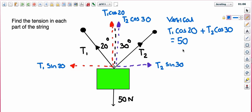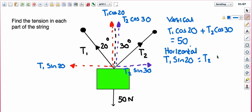And then we're going to do the horizontal. There are only two horizontals, there's T1 sin 20 and T2 sin 30. So they must be equal to each other. So T1 sin 20 must equal T2 sin 30.